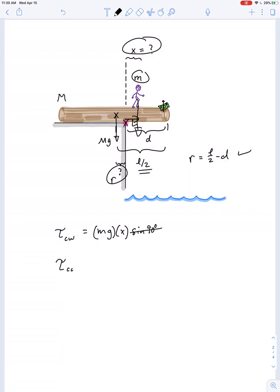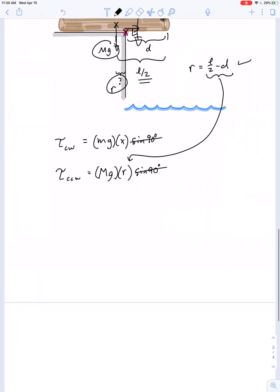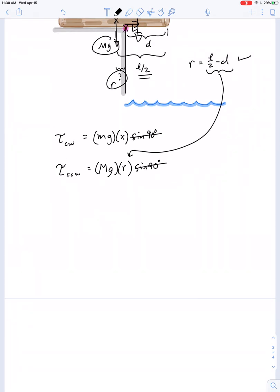The counterclockwise torque, that's due to the weight of the log. So capital Mg times R, and then that's also times sine of 90. But we know what R is equal to, we can make a substitution. So we'll substitute and set these equal to each other.